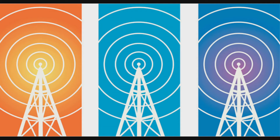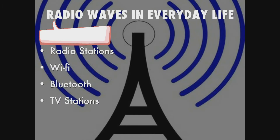Radio waves are a type of electromagnetic radiation with wavelengths in the electromagnetic spectrum longer than infrared light. Radio waves have a frequency from 300 gigahertz to as low as 3 kilohertz, corresponding to wavelengths from 1 millimeter to 100 kilometers.